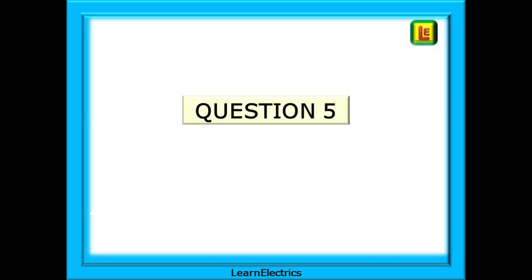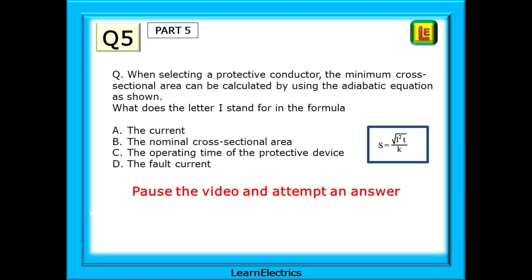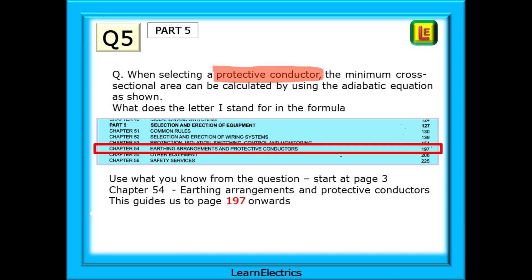And now question 5 on part 5 of the book. When selecting a protective conductor the minimum cross-sectional area can be calculated by using the adiabatic equation as shown. And the question asks what does the letter I stand for in the formula?